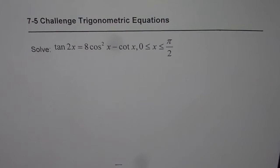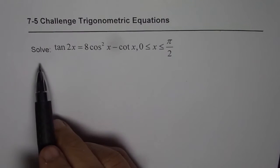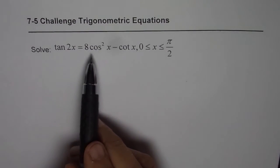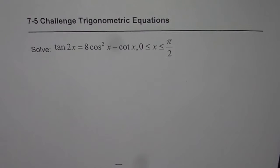I'm Anil Kumar and here is a challenge question for my subscribers and students. The question is: solve tan 2x equals 8 cos square x minus cot x, where x is greater than or equal to 0 and less than or equal to pi by 2. You can pause the video, copy the question, answer it, and then look into my suggestion. It'll be a great learning experience.